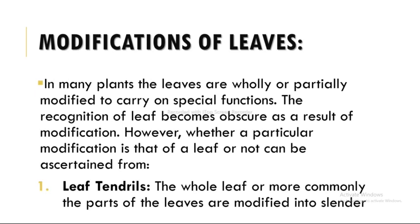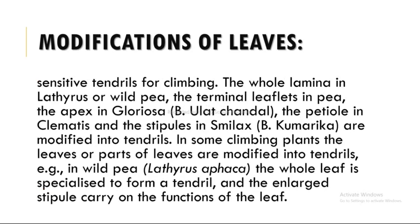The first modification is leaf tendrils. In leaf tendrils, the whole leaf or more commonly parts of the leaves are modified into slender sensitive tendrils for climbing. The whole lamina in Lathyrus or wild pea, the terminal leaflets in Pisum, the apex in Gloriosa, the petiole in Clematis, and the stipules in Smilax are modified into tendrils. In wild pea (Lathyrus suffaca), the whole leaf is specialized to form a tendril and the enlarged stipule carries on the functions of the leaf.